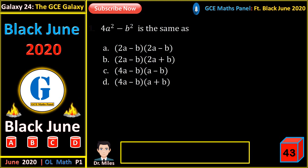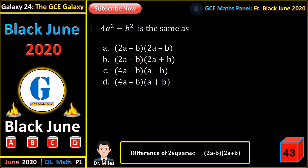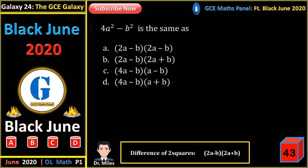4a squared minus b squared is the same as? Observe, this is a difference of two squares. To factorize, we take the square root of both terms and put minus in one bracket, plus in the other. So we have (2a minus b) times (2a plus b).